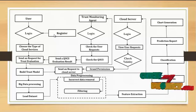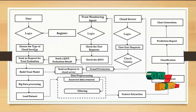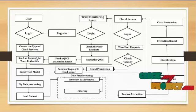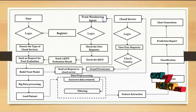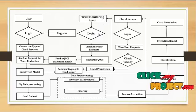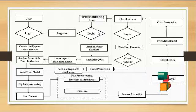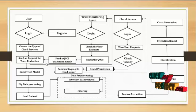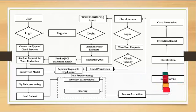After successful login, the user will choose the type of cloud service they want to use — either a public or a private cloud. After choosing the cloud service type, they will send a request to the trust monitoring agent to evaluate the trustworthiness of the cloud service provider. The trust monitoring agent will log in using their username, password, and secret key, then check the user request and send an evaluation report back to the user.